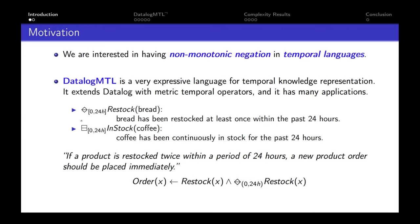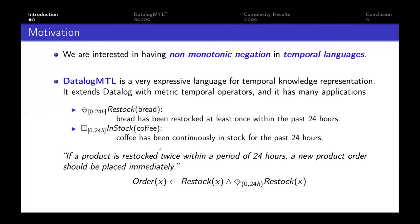We can also use the past box operator, for example, to say that a fact holds continuously within this interval in the past, saying that coffee has been continuously in stock for the past 24 hours. The rules of the language also allow you to say that if a product is restocked twice within a period of 24 hours, a new product order should be placed immediately, using a rule like this.